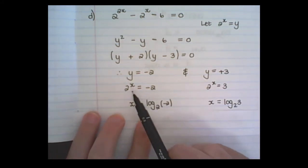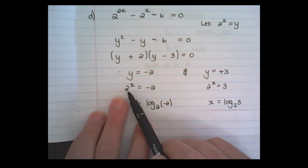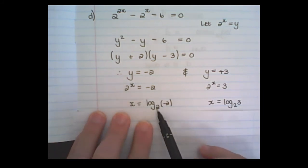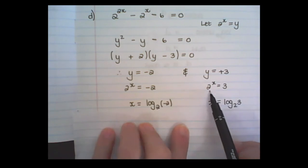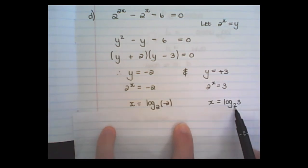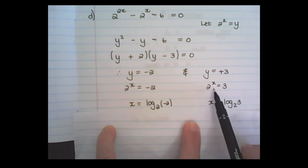If I rewrite this as a log, the base of the exponent becomes the base in the log, the exponent becomes the answer, and that value becomes the argument. The same on this side. The base becomes the base of the log, the value is inside as the argument, and x becomes the answer.